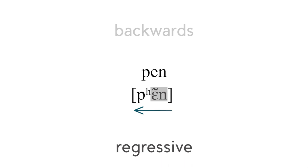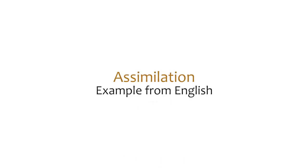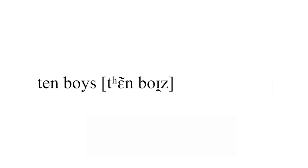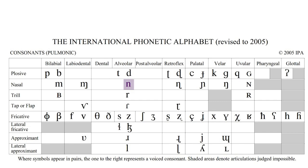Once you look at it this way, it becomes clear. Assimilation can happen inside a word or between two words. Take 'ten boys': if I say it slowly and enunciate clearly, it's 'ten boys'. But in rapid speech, the first word ends in 'n' — let's look at our chart — which is an alveolar nasal.